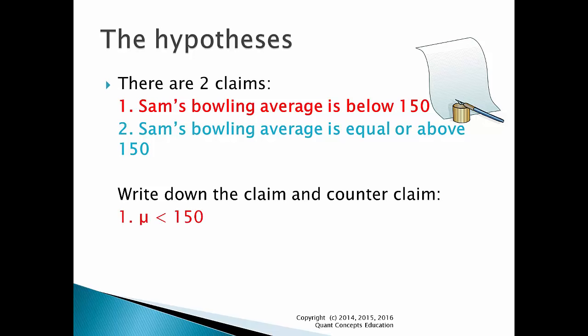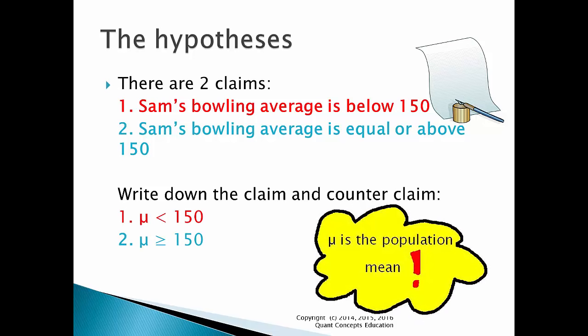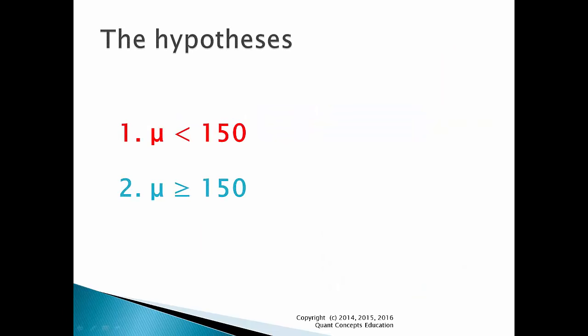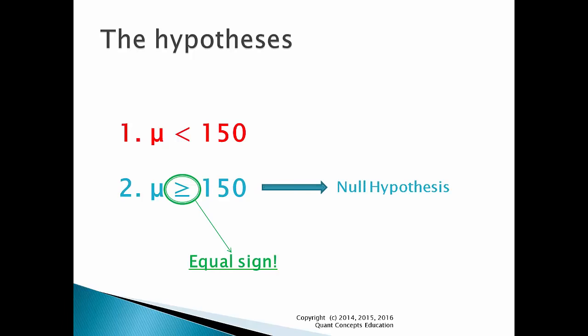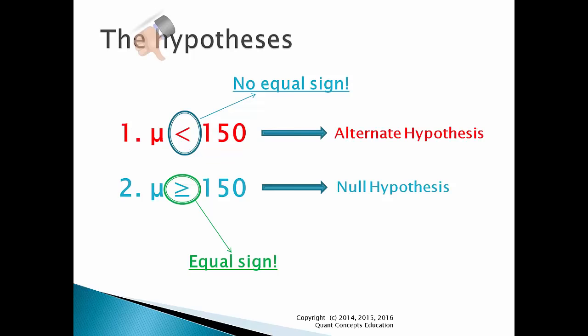One: Sam's lying and his bowling average is below 150. Or two: Sam is telling the truth and his bowling average is equal to or above 150. Let's write down these claims formally. The first is that Sam's true bowling average is below 150. The second claim is that Sam's true bowling average is 150 or above. Mu, which looks like a U, represents the population mean or population average. This is the true average that we cannot observe — we will never really know Sam's true bowling average because we haven't seen every single game he's played in his entire life. So we have our two claims. Pretty easy so far, yeah?